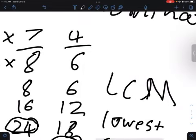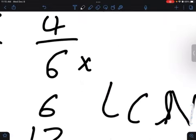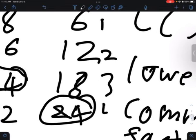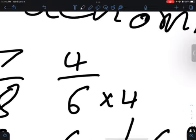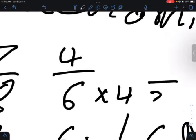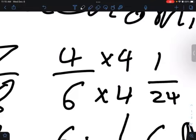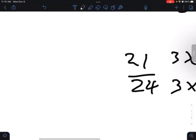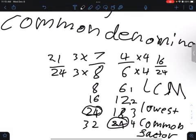Same with this fraction. We need to multiply by 4, because 6 times 4 gets us to 24. And then we also multiply this one by 4 to get 16.